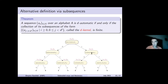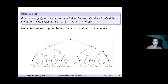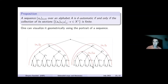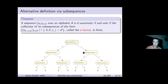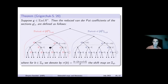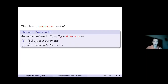Combining the geometric view of subsequences as sub-portraits with our explicit result on how portraits of sections relate to the original portrait gives the proof of Anashin's theorem. There is also an effective procedure: starting from an endomorphism, you obtain the Moore automaton, and conversely, starting from a Moore automaton defining the sequence of reduced Van der Put coefficients, you can effectively construct the Mealy automaton. In both directions, the constructed automaton covers the original one as a graph.